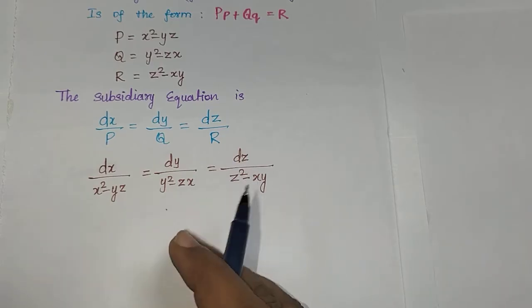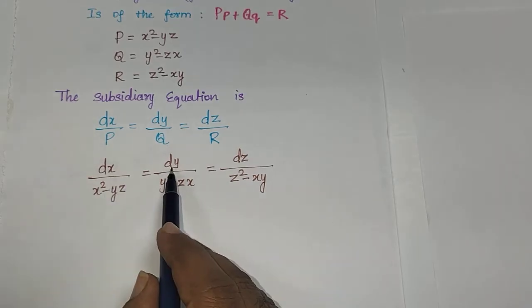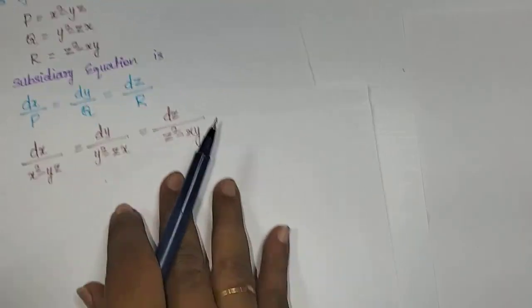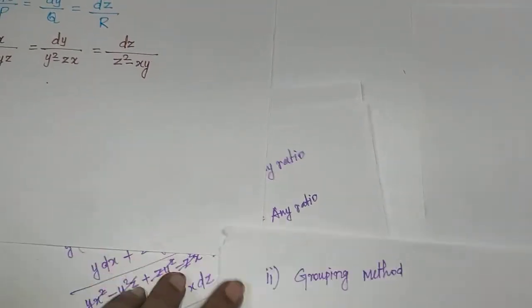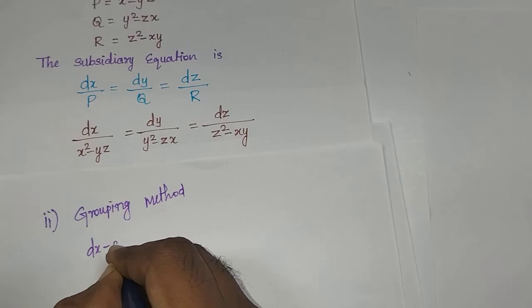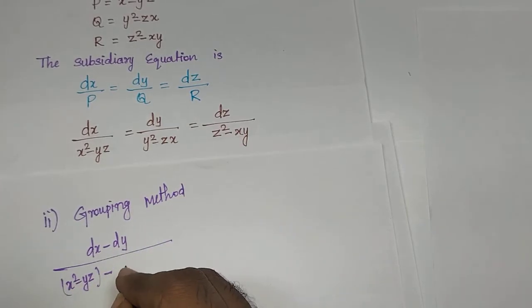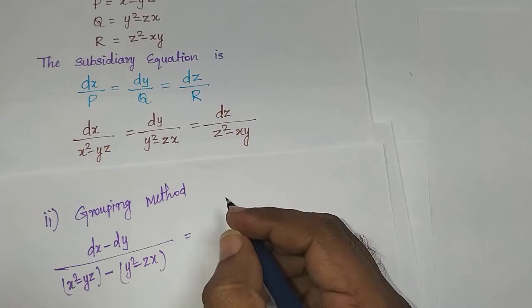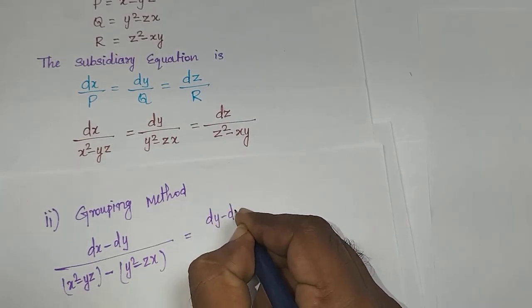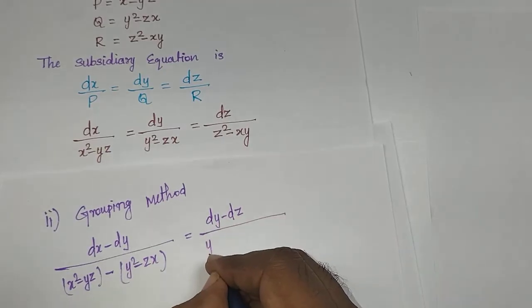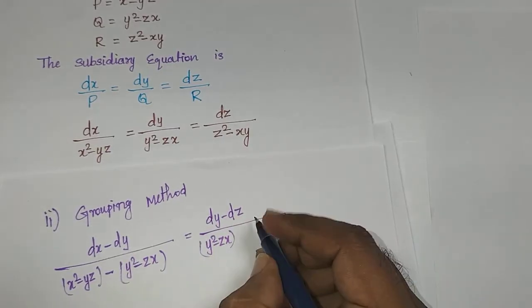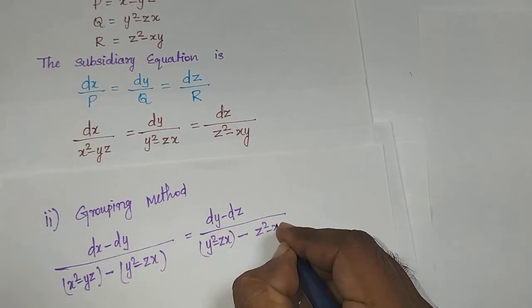I am going to apply the grouping method by subtracting: first (dx - dy), then (dy - dz), and equating the terms. So I write: (dx - dy)/[(x² - yz) - (y² - zx)] = (dy - dz)/[(y² - zx) - (z² - xy)].